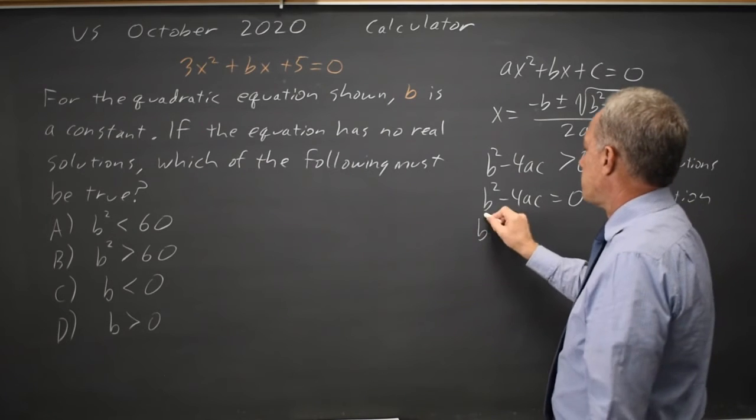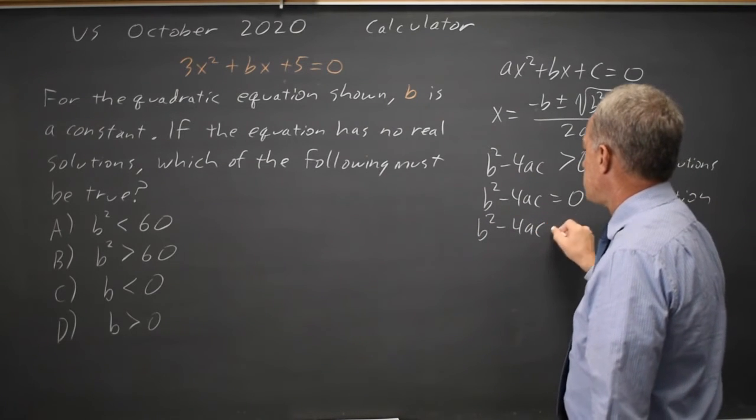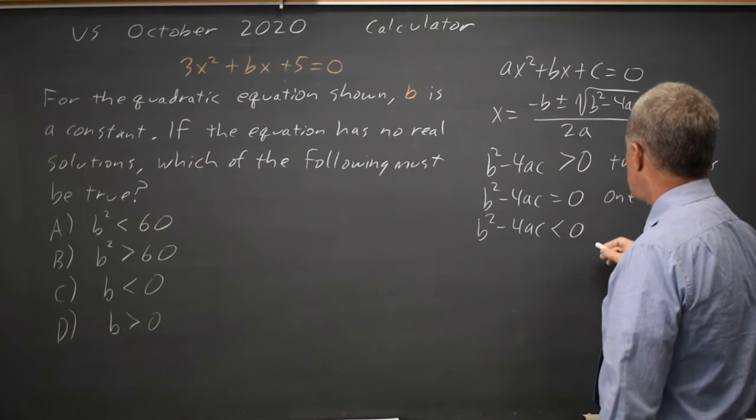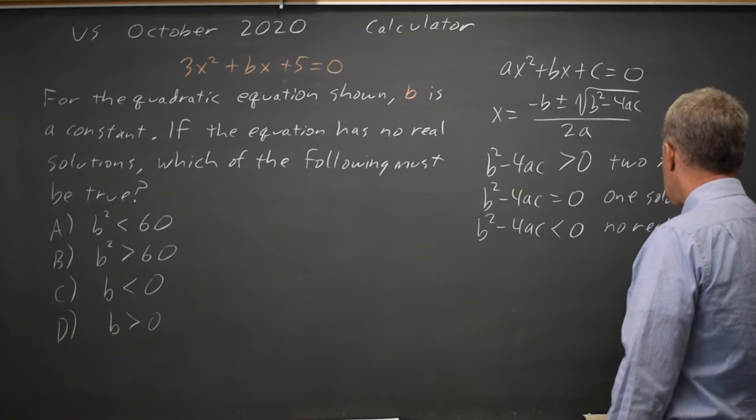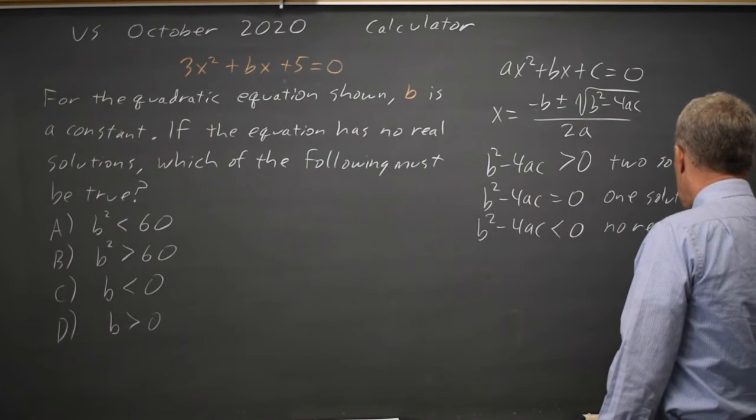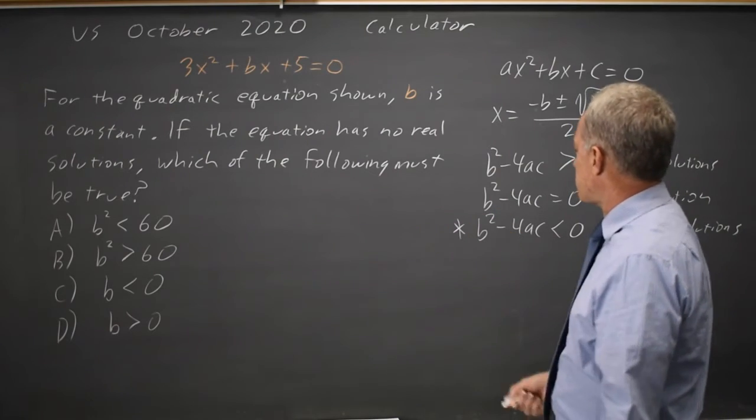And if B squared minus 4ac is less than zero, you get no real solutions. And this is the case they're asking about in this question.